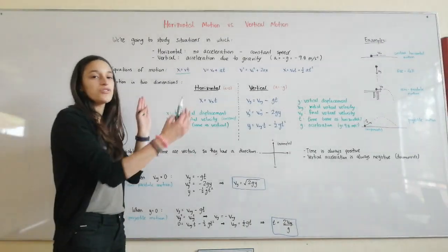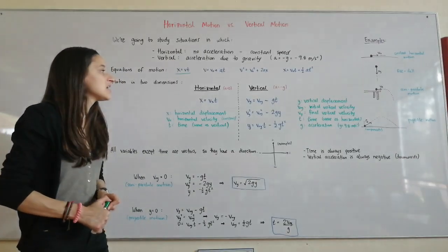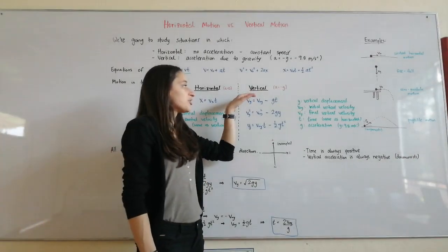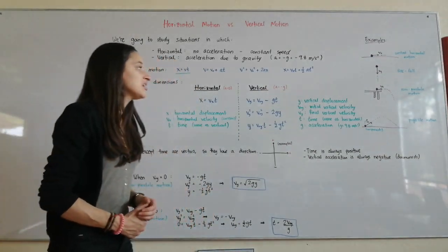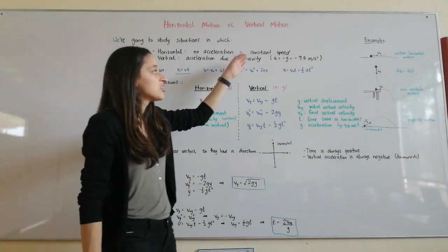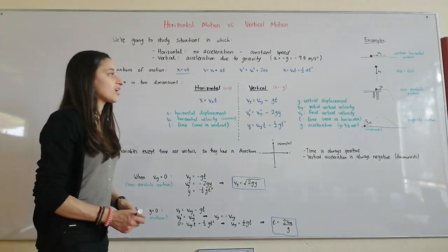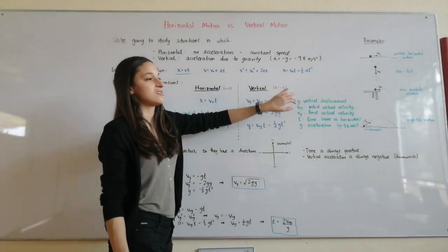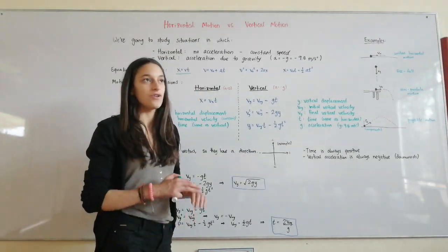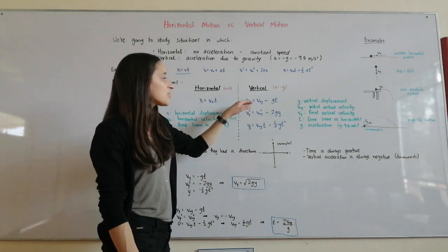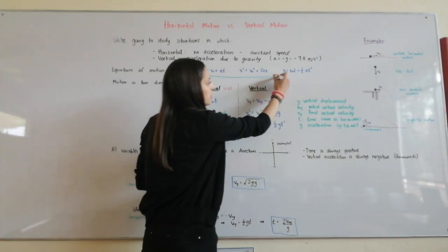The time is going to be the same both horizontally and vertically, because time is universal. For the vertical part, we are going to have an acceleration, and that acceleration is going to be negative g. Remember, g is 9.8 meters per second squared — acceleration due to gravity — and the negative is there because the acceleration is downwards. We're going to use it as negative always from now on, and use the three equations that do have acceleration.